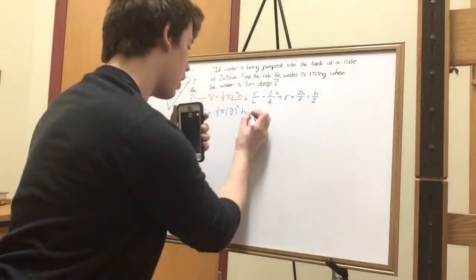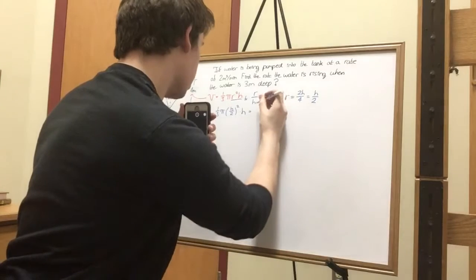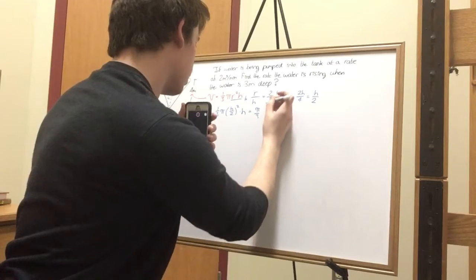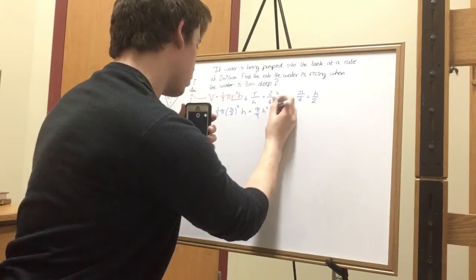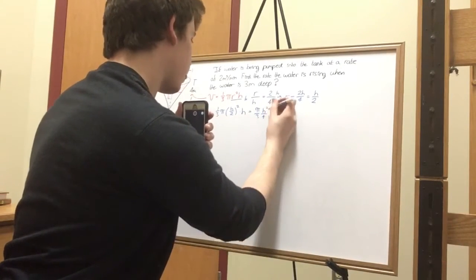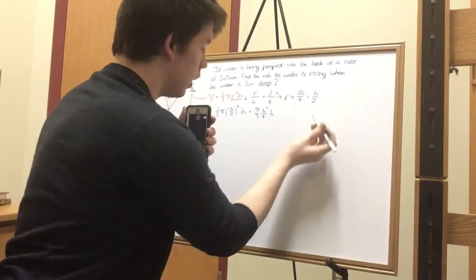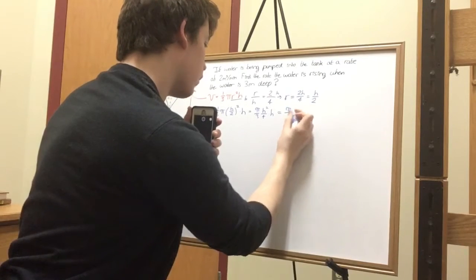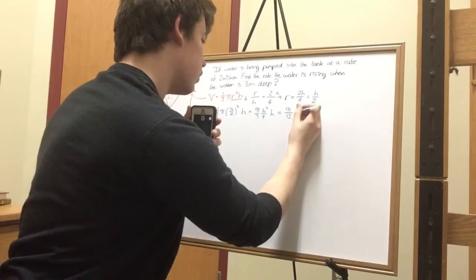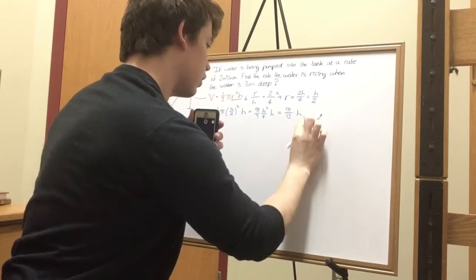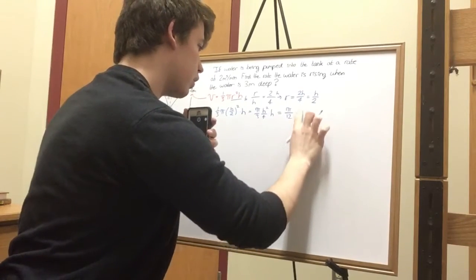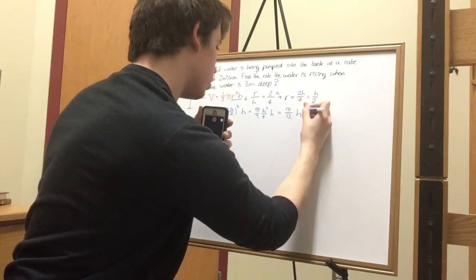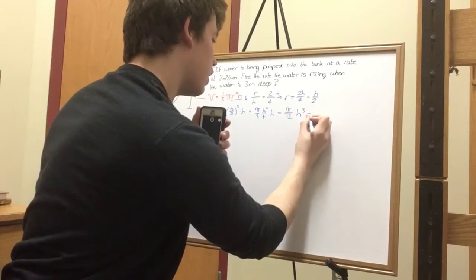So let's multiply that out. I'm gonna simplify the equation. So pi over three, pi h squared over four times h. And here again, we shall say pi over twelve times h. Oh that's ugly, that's disgusting. Sorry folks. H cubed. That's our volume.